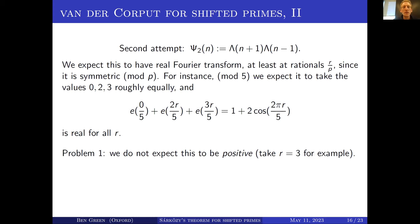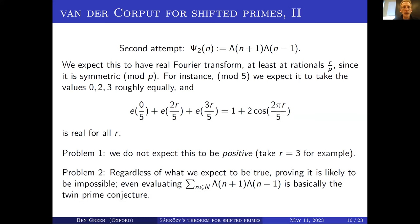But it does have some problems. First of all, there's no reason to expect this to be real and positive — in this mod 5 example, if I take r = 3, it won't be positive even though it's real. And the problem staring us in the face is that we have no hope whatsoever of saying anything rigorously about ψ₂, because even the fact that this is non-zero is the twin prime conjecture.